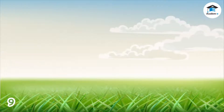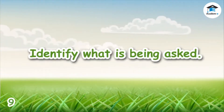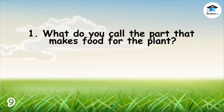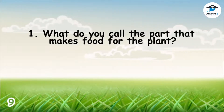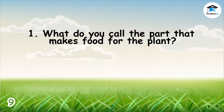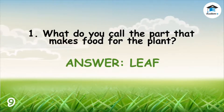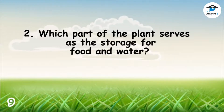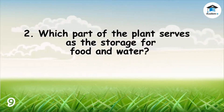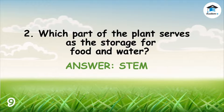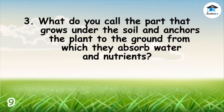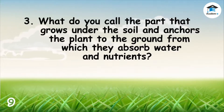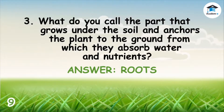To check how well you understood the lesson, let us have a short exercise. One: What do you call the part that makes food for the plant? The answer is leaf. Two: Which part of the plant serves as the storage for food and water? The answer is stem. Three: What do you call the part that grows under the soil and anchors the plant to the ground, from which they absorb water and nutrients? The answer is roots.